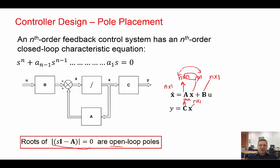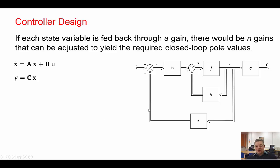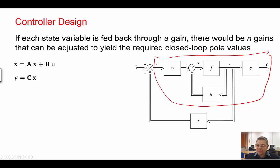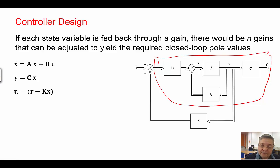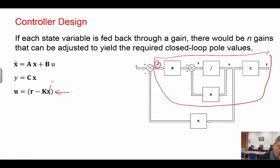So what about taking the state variables, each one of them, multiplying by a gain and using feedback so that we end up with poles at a different location? We change the location of the closed-loop poles to improve the performance of the system. We take X as a vector, multiply by gains K. The control signal U is modified: U equals R minus KX.